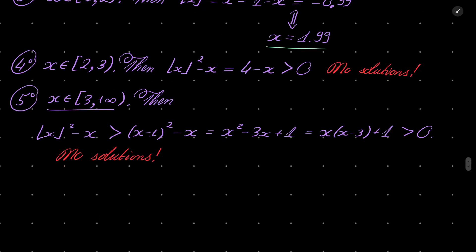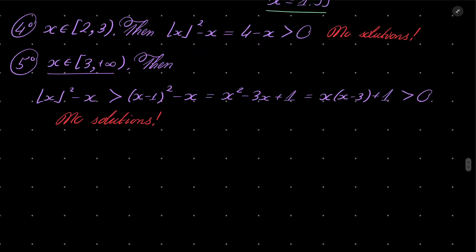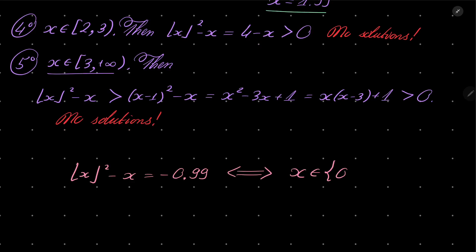So all in all, we have only two solutions: 0.99 and 1.99. Floor of x squared minus x equals minus 0.99 if and only if x is either 0.99 or 1.99.